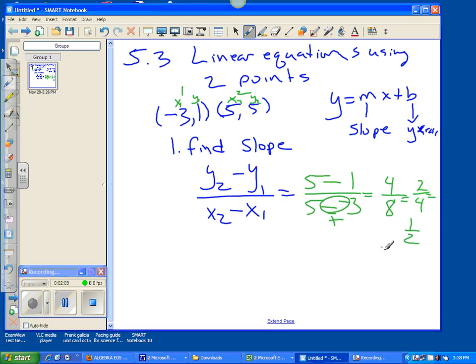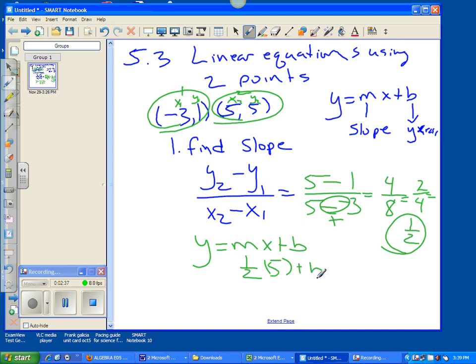Now that you have the slope of 1 half, all you have to do is rewrite the formula y equals mx plus b, put the 1 half where the slope is, and choose one of your points, either point 1 or point 2, to substitute for x and y. Don't mix them up, just choose one of the points. In this case, I'm going to choose point 2, so we have 5 equals 1 half times 5 plus b. I hate working with negatives, therefore I chose one that was positive.